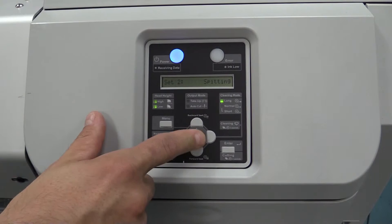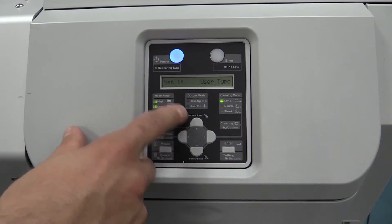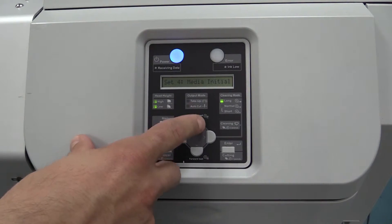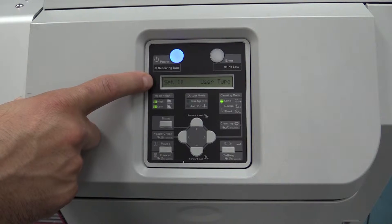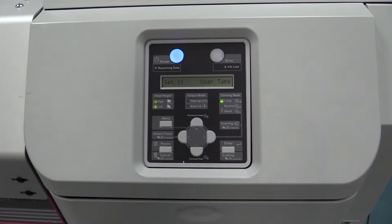You'll see each of the settings has a number, setting 1, setting 2, and so forth. Setting 1 is user type, and this is where you'll set up your different media types. We actually have a separate video that goes into this process in detail.